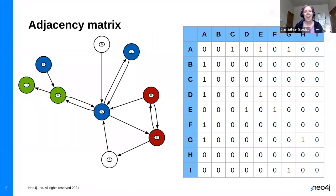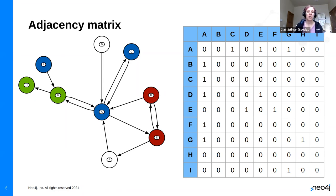How would we do math on graphs? We can convert those graphs into a matrix — a matrix of ones and zeros, or you could replace those ones with the strength of the relationship. I've given each node a label A through I. If there is a connection between two nodes, you see a one in the column. For example, A is connected to C, so I have a one there — and C is also connected to A, so I can see that relationship as well.